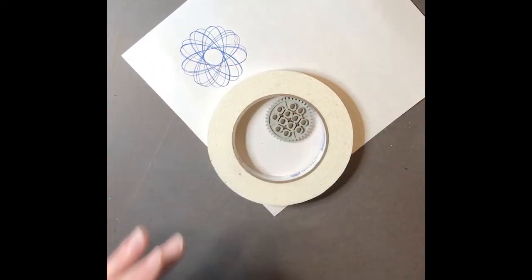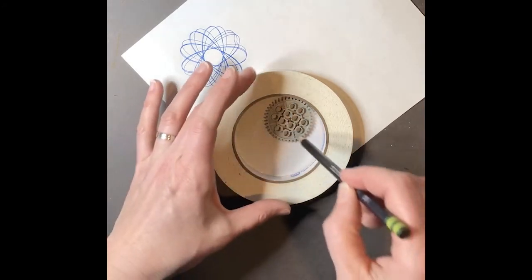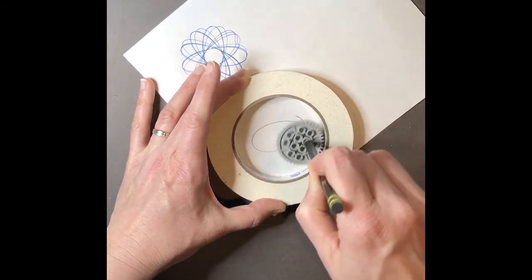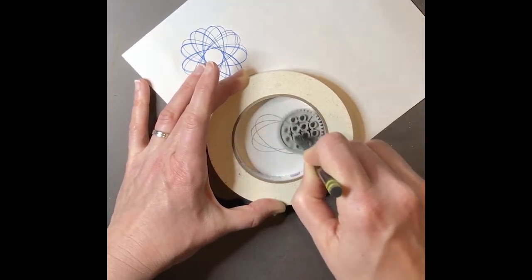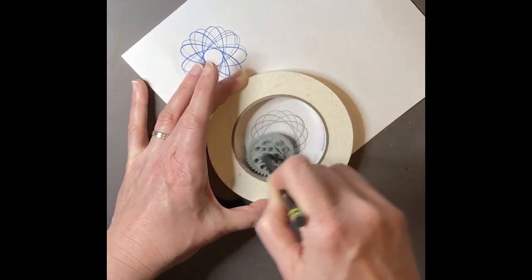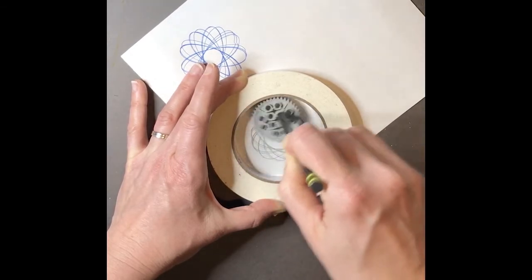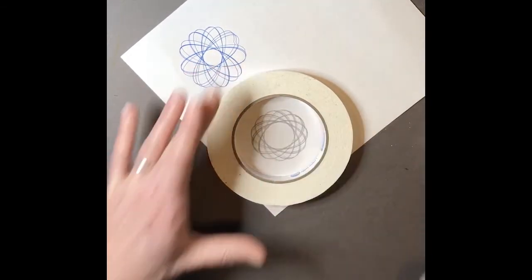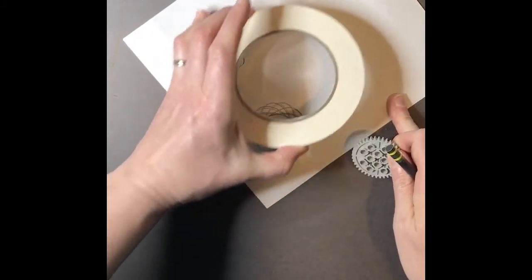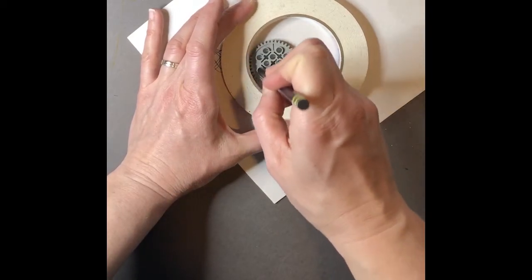It would help if my pen reached all the way down. Let's try a pencil. Okay, so the teeth on the gear seems to really like the double-sided tape as well. And depending on what hole you put your pencil in, you're going to get a different design.